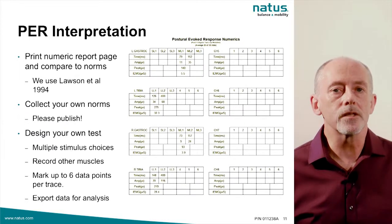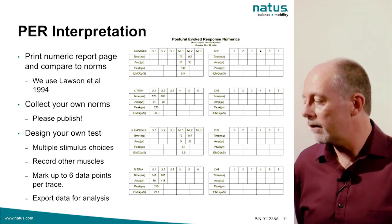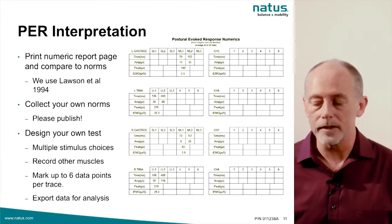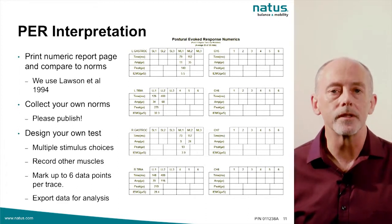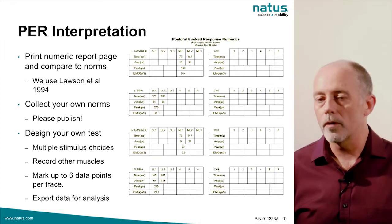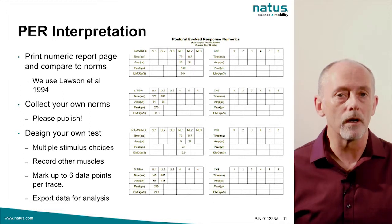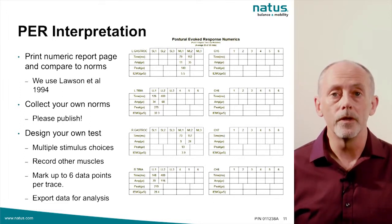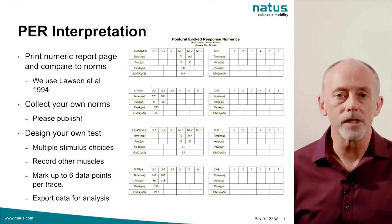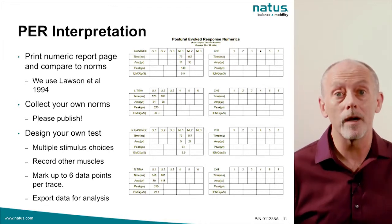The Postural Evoked Response Test is interpreted by performing the test, marking the latencies manually, and then comparing the latency and amplitude data obtained to published normative data. We use Lawson et al. 1994, published in the Journal of Vestibular Research, for our normative data. Keep in mind that when recording toes-up tilts from tibialis and gastroc, that's the standard clinical protocol — but the PER Test is very flexible. You can use any motion profile, including translation, toes-up, or toes-down tilts, and record from any muscle group. The standard test protocol is simply what we have published norms on.